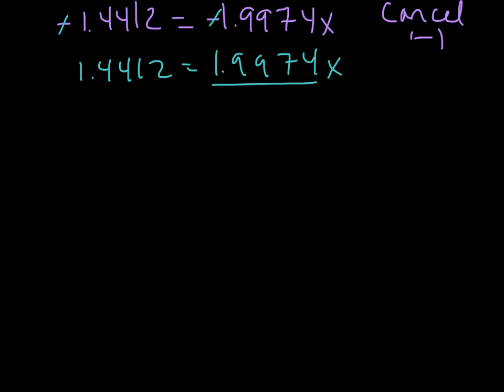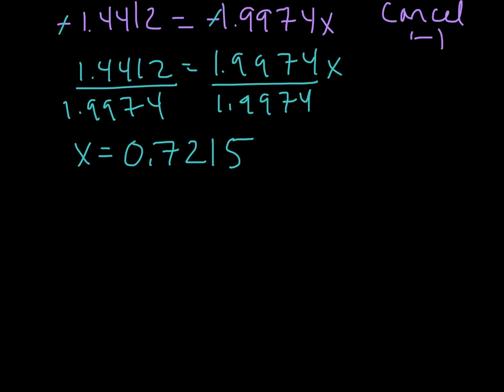So now we want to solve for x, so let's go ahead and divide both sides by 1.9974. So if we do that math, we're going to end up with 1.4412 divided by 1.9974, and we end up with x equals 0.7215.